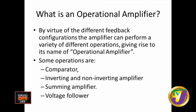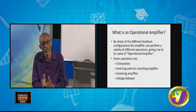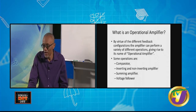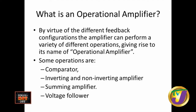Why is it called an op-amp? Because by virtue of the different feedback configurations, the op-amp can perform a variety of operations — that is what gives rise to the word 'operational amplifier.' It is an amplifier by nature and can perform various operations. Some of the operations it can perform include: comparator, inverting and non-inverting amplifier, summing amplifier, and voltage follower.